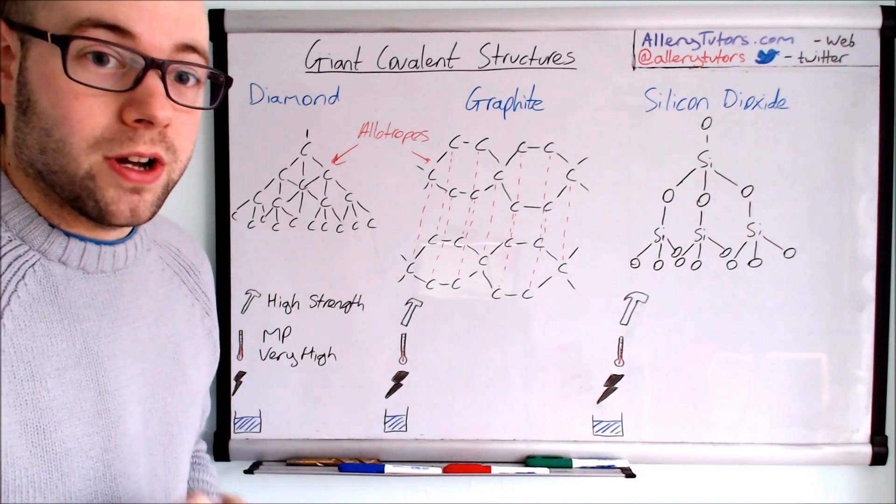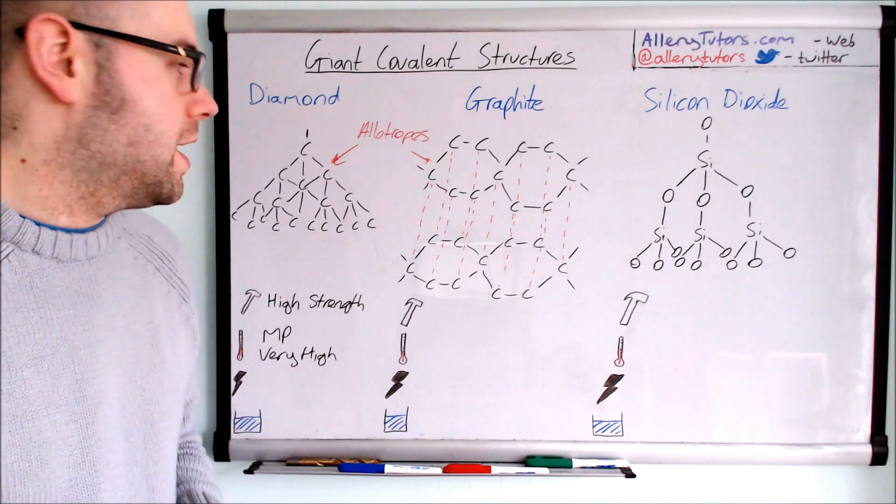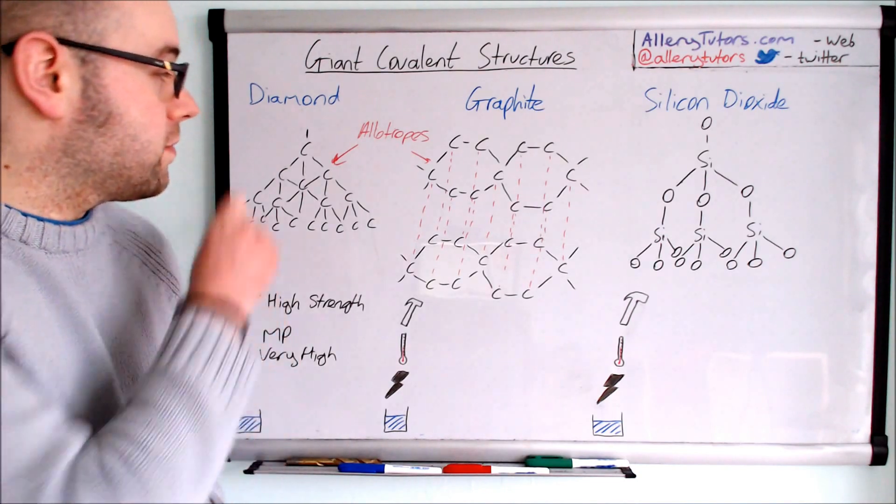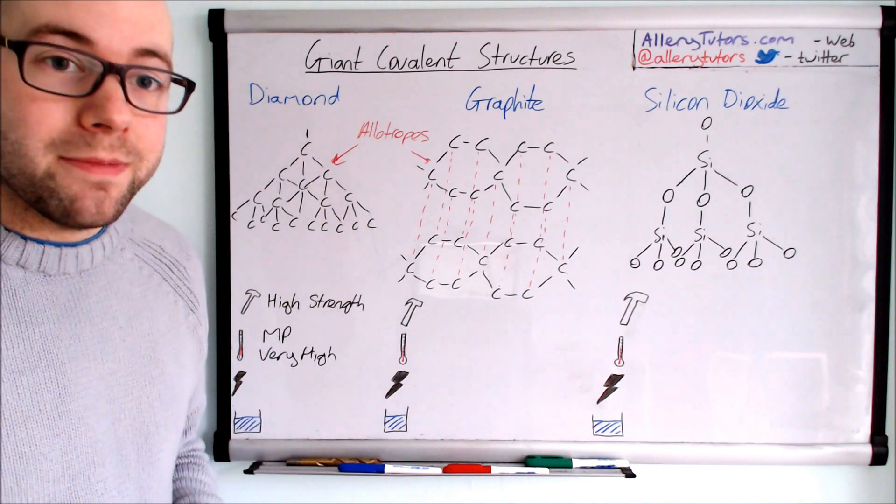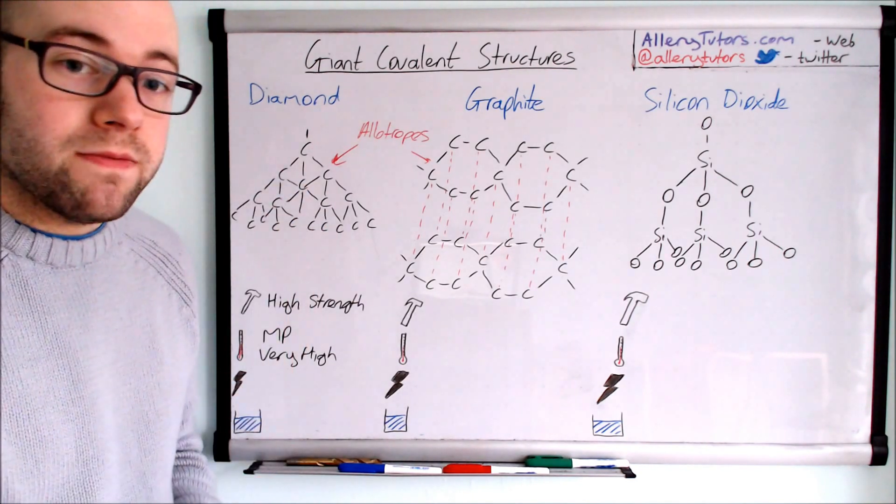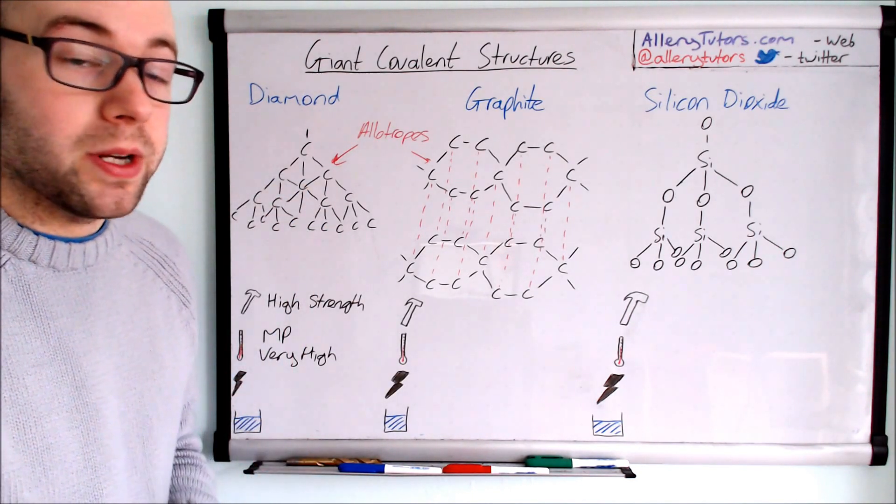This is the type of terminology you need to use in your exam - the idea that you have lots of strong covalent bonds and you need a large amount of energy to overcome these strong bonds. Because you have lots of them, every carbon in diamond is bonded four times, making it really strong with a very high melting point.